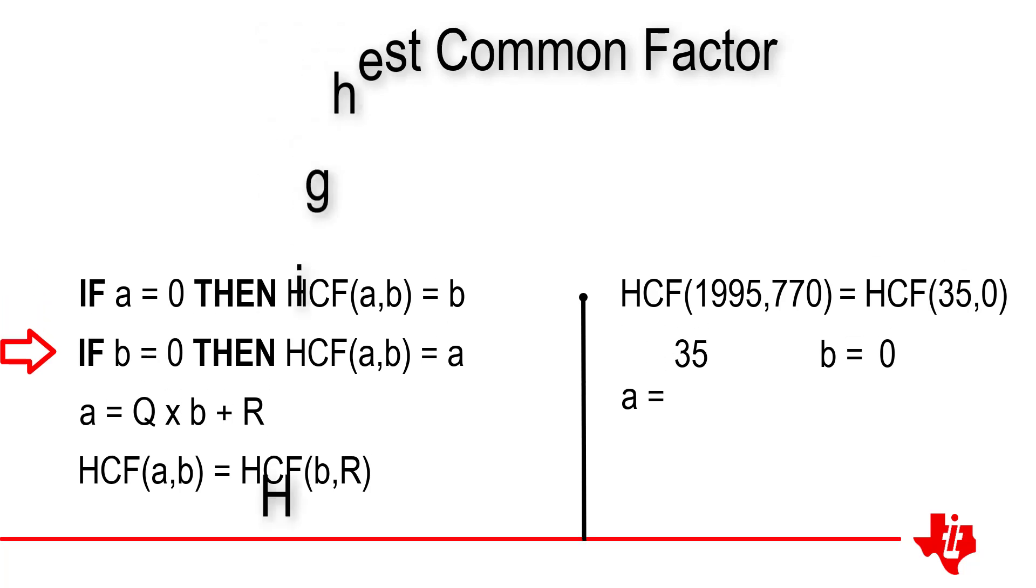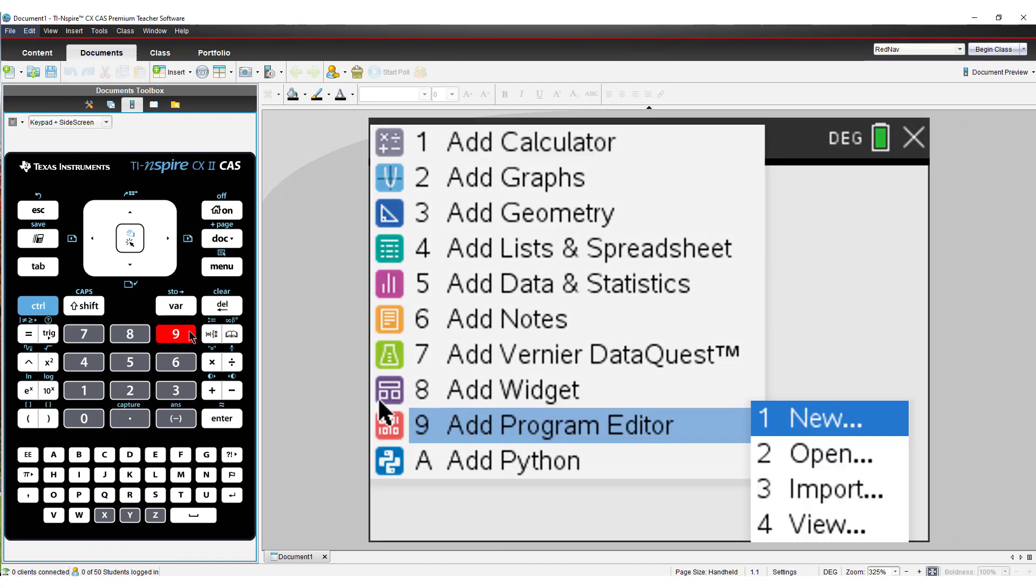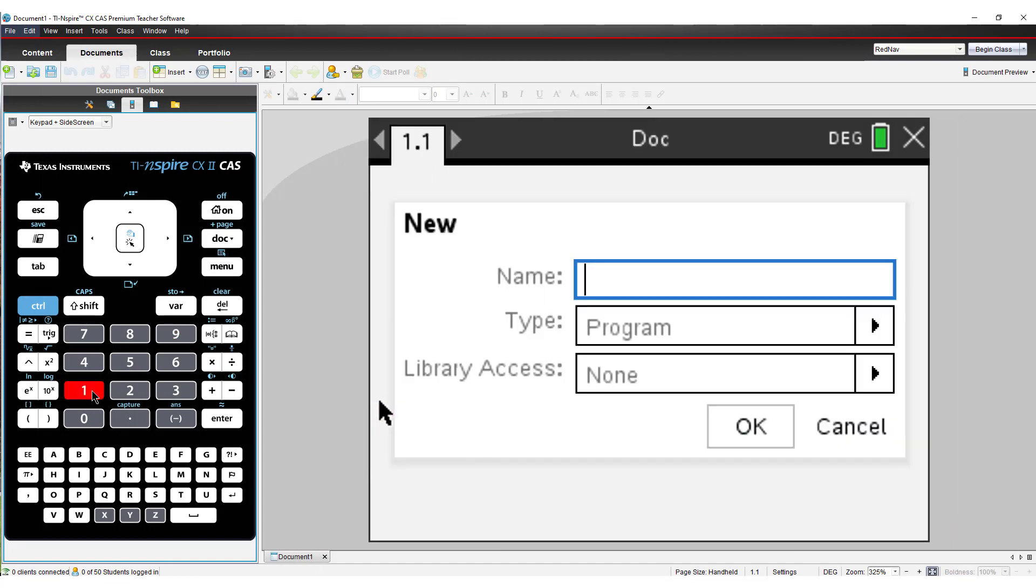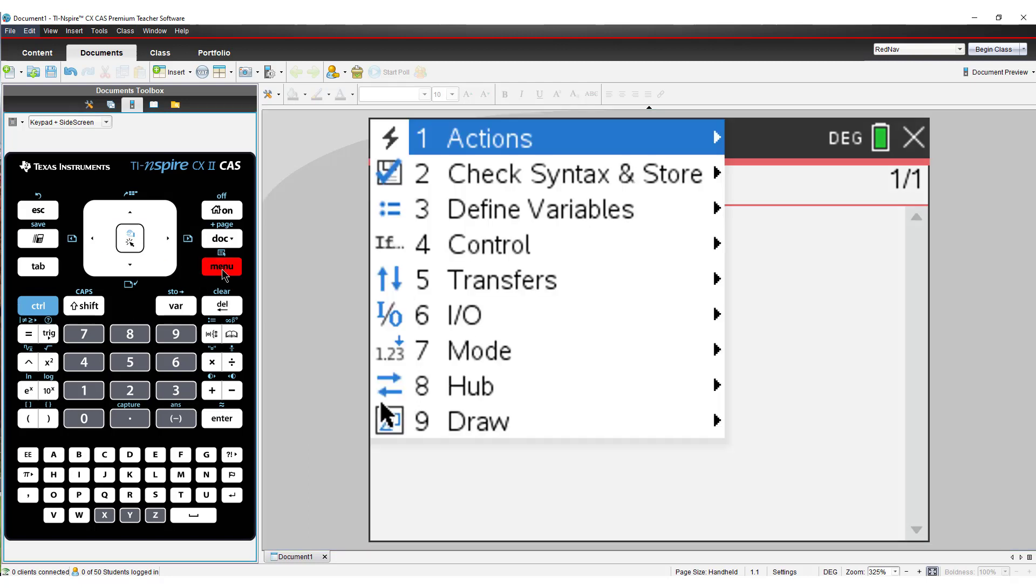Now let's put all of that into a program. I'll call my program EHCF. Rather than use a request statement, I'll put a and b in the original program definition. Now we can launch straight into the algorithm.